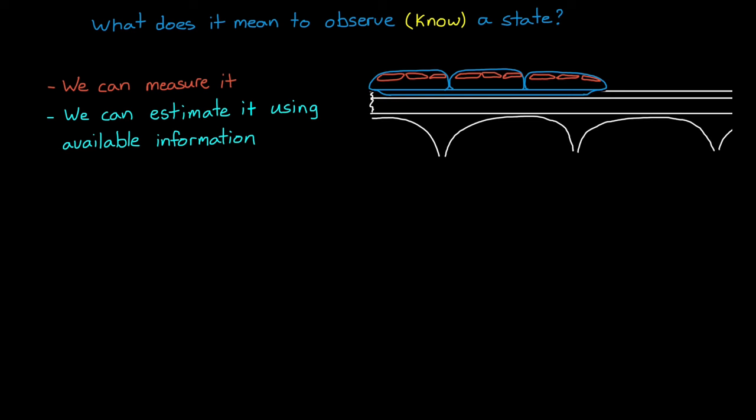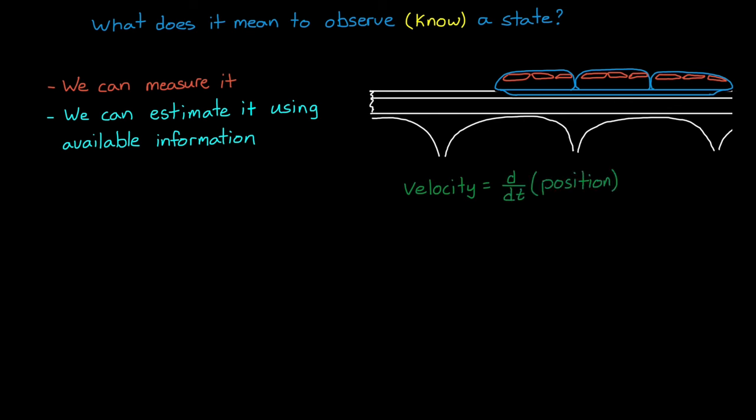For example, with the monorail, we wouldn't have to install a speedometer and a position sensor in order to know both of those states. Velocity can be estimated by differentiating position, and position can be estimated by integrating velocity. So you'd only need to measure one of those states and you can infer the other.